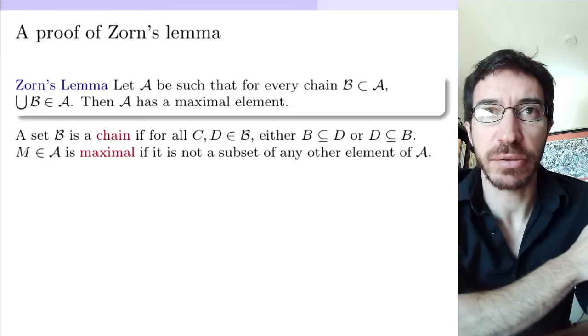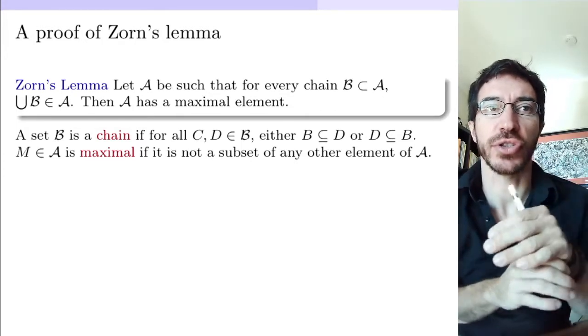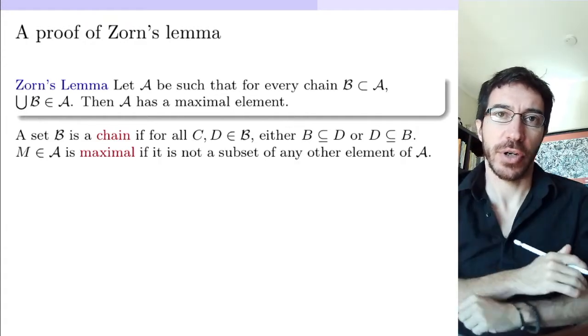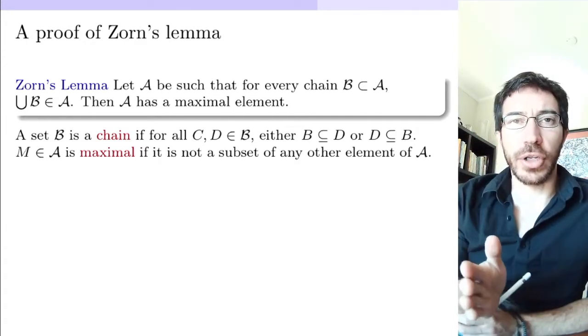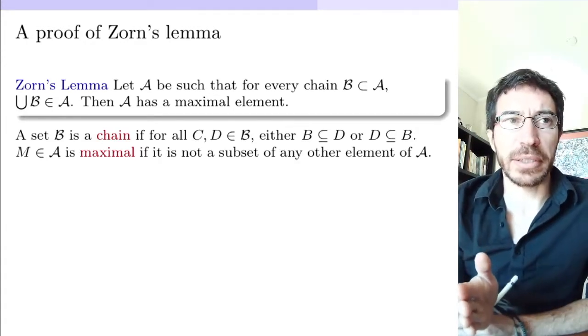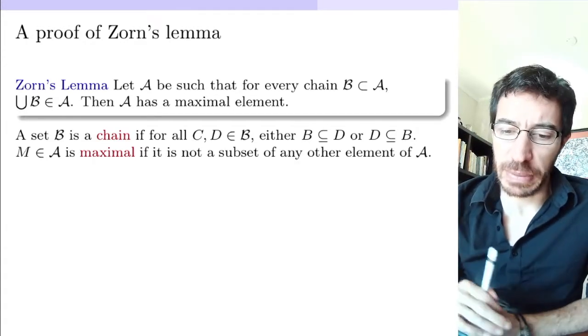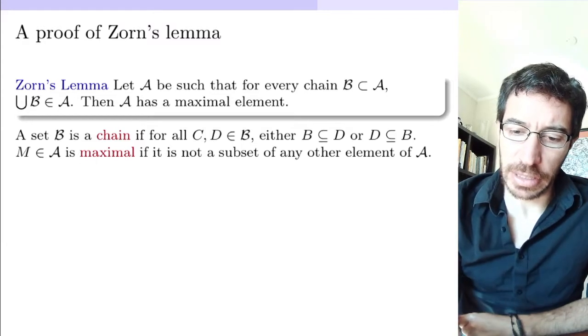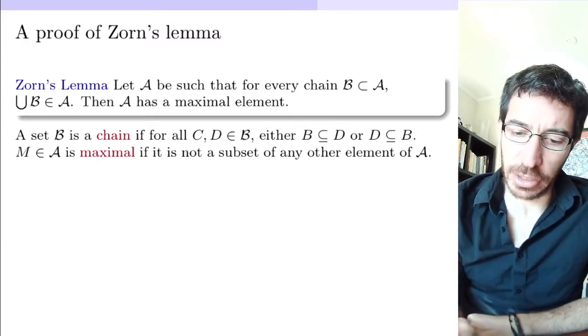Ordinals don't need the axiom of choice, so the axiom of choice is going to come in a separate part. Let's do a quick reminder of what Zorn's Lemma says, since we're going to give the proof right here.